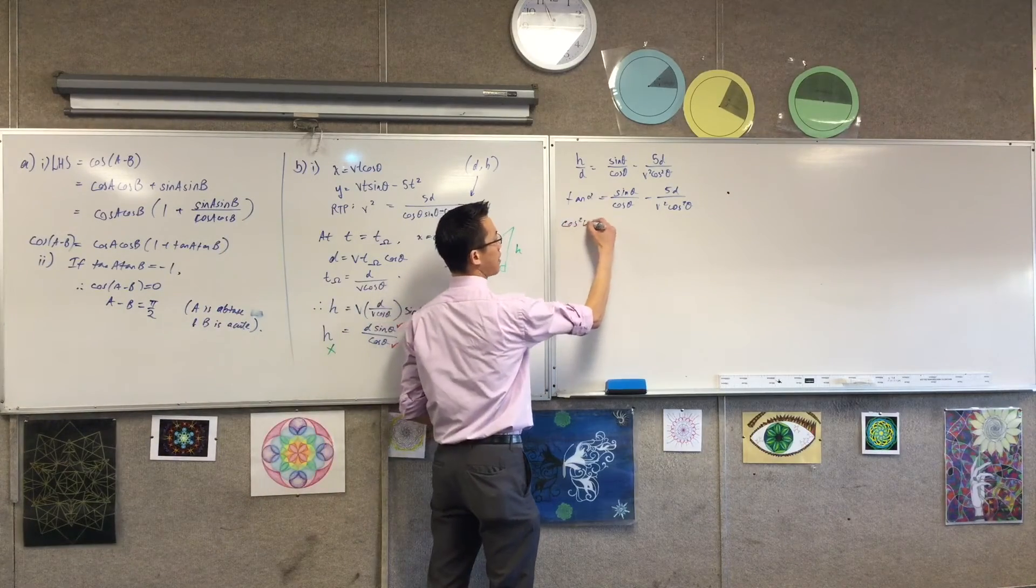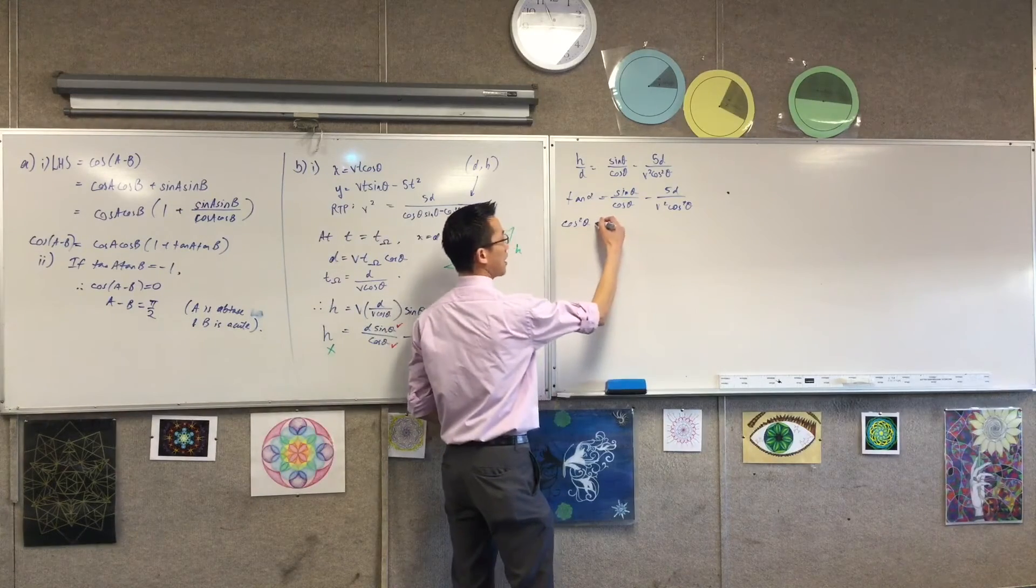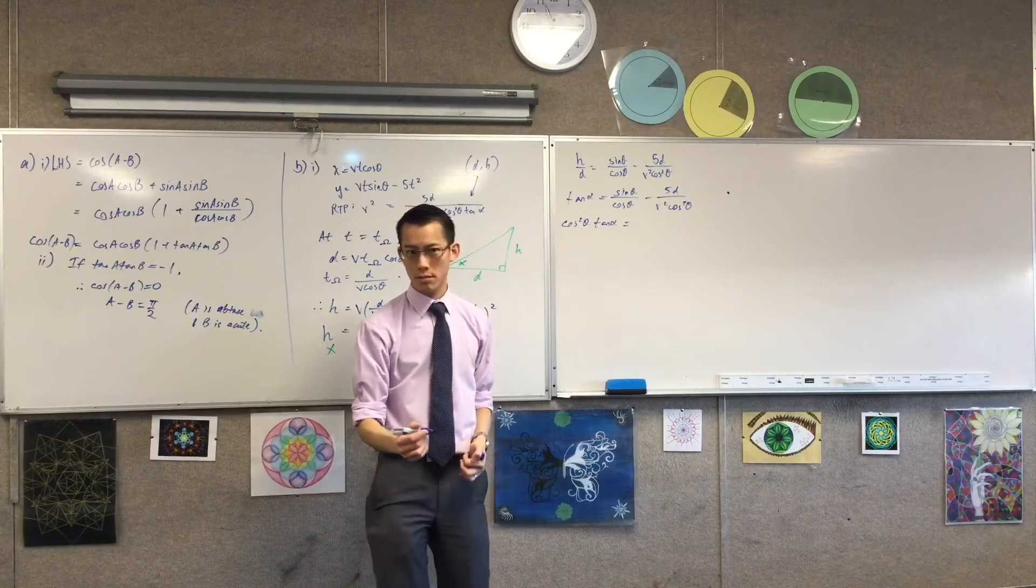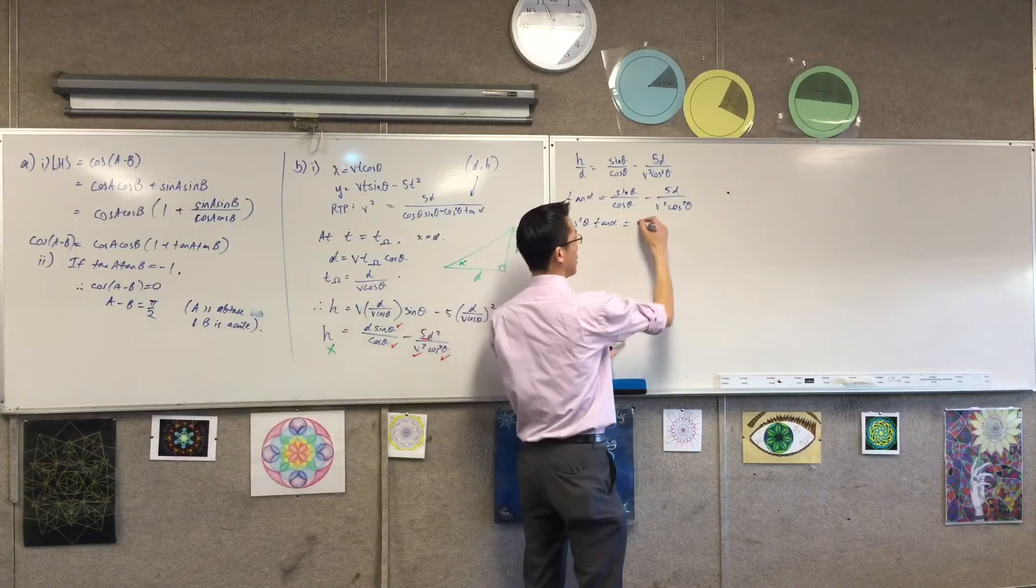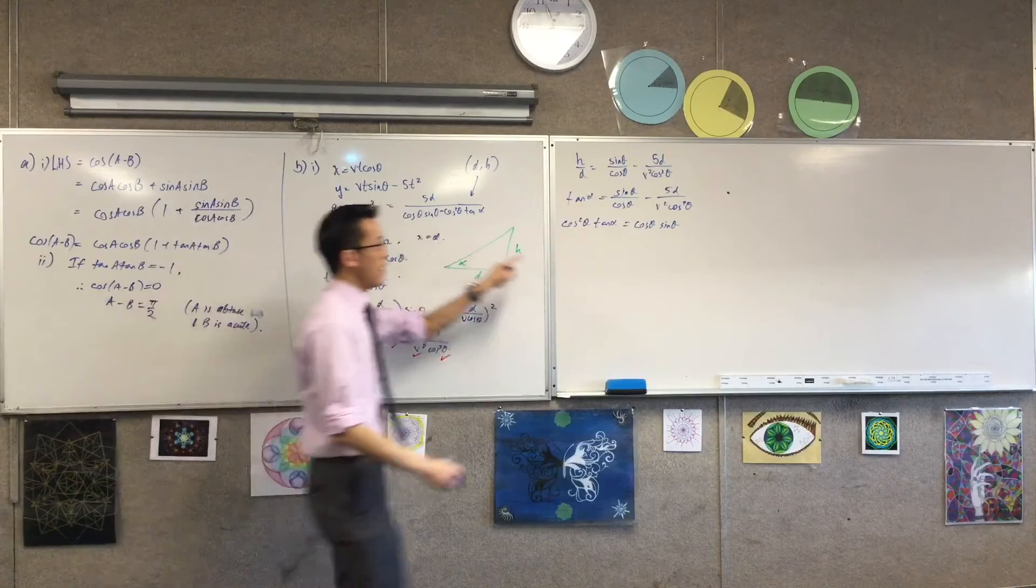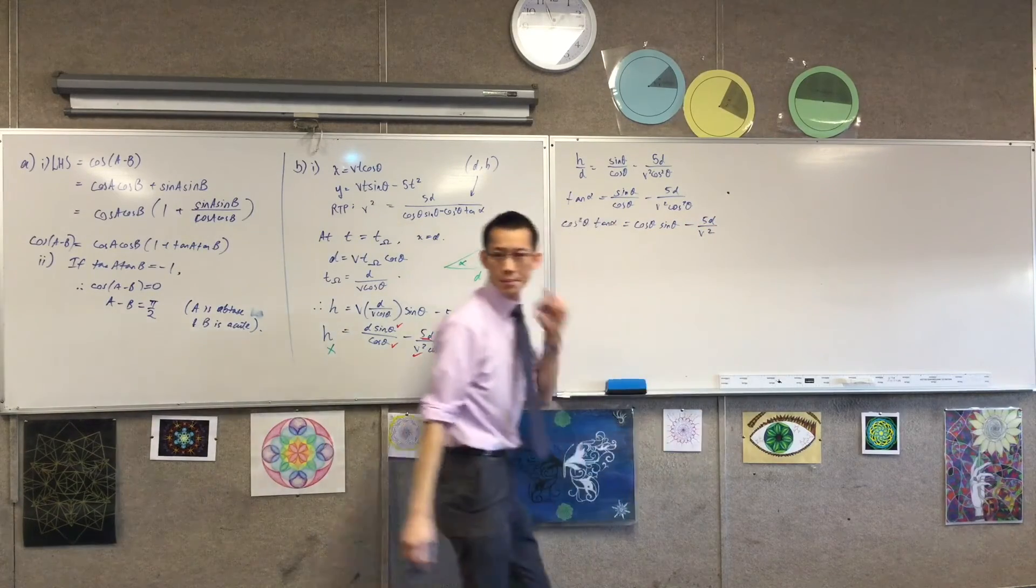So if I multiply through, which by the way is equivalent essentially to getting the common denominator, I'm going to get cos squared tan alpha here. What's going to happen to this sine theta? It'll be sine theta cos theta or in the order they've given us, cos theta sine theta. And what you get left with over here is that.